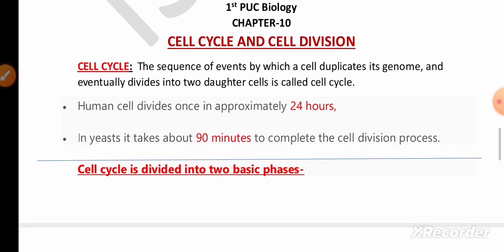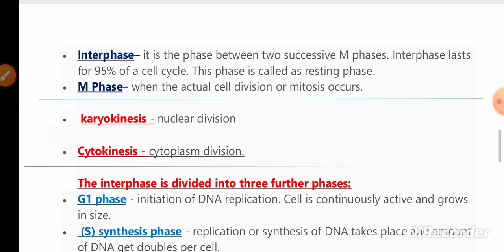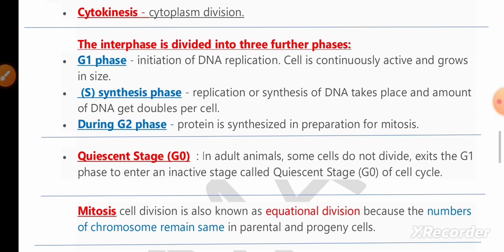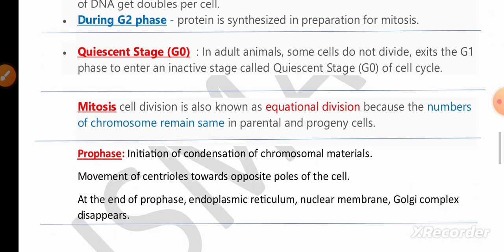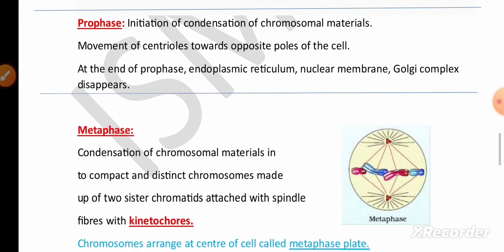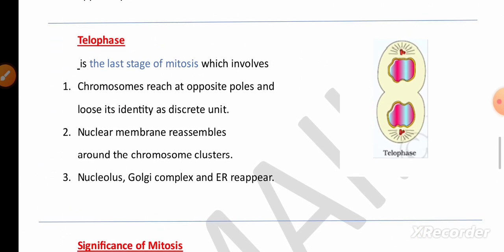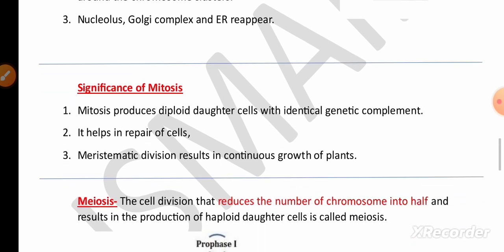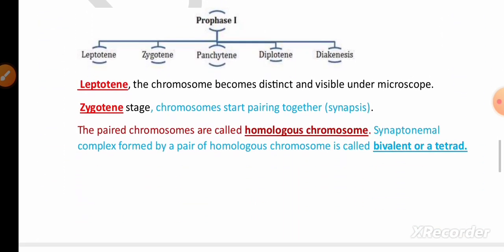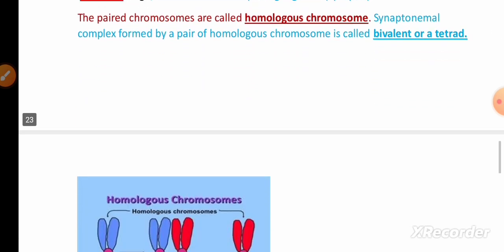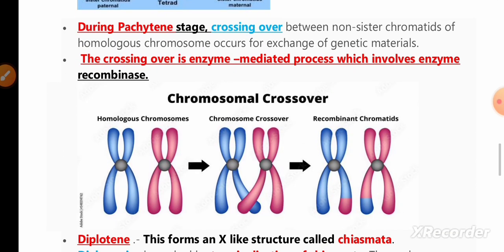In the Cell Cycle and Cell Division chapter, remember the interphase and M phase, definitions of karyokinesis and cytokinesis. The interphase has G1, S, and G2 phases — remember the quiescent stage (G0). Remember the characteristics of prophase, metaphase, anaphase, and telophase, which are very important and may be asked for three marks. For two marks, remember the significance of mitosis. For one mark, remember the characteristics of leptotene, zygotene, and crossing over.